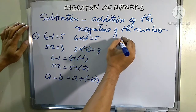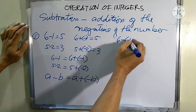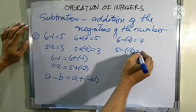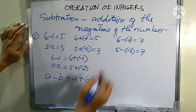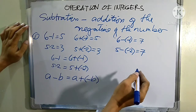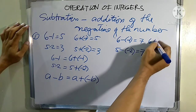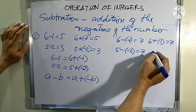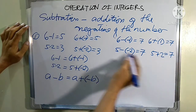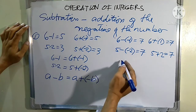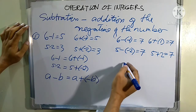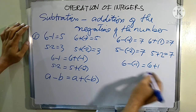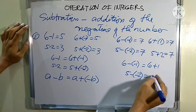Also from our earlier examples: six minus negative one equals seven, and five minus negative two equals seven. Based on our previous knowledge of addition of integers, we have six plus one equals seven and five plus two equals seven. So we can write: six minus negative one is equal to six plus one, and five minus negative two is equal to five plus two.